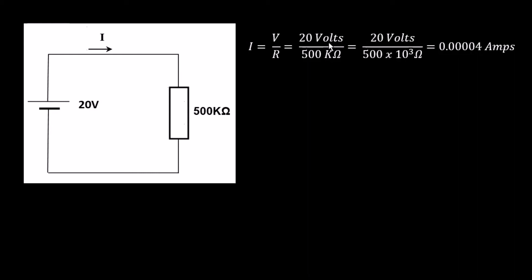So 20 volts, 500 kilo ohms. How are we going to put this kilo into our calculator? Remember, it's 10 to power 3. Kilo is 10 to power 3. So we replace the kilo, the K, with 10 to power 3, and we put this in our calculator, and that's what we get. So it's as simple as that.